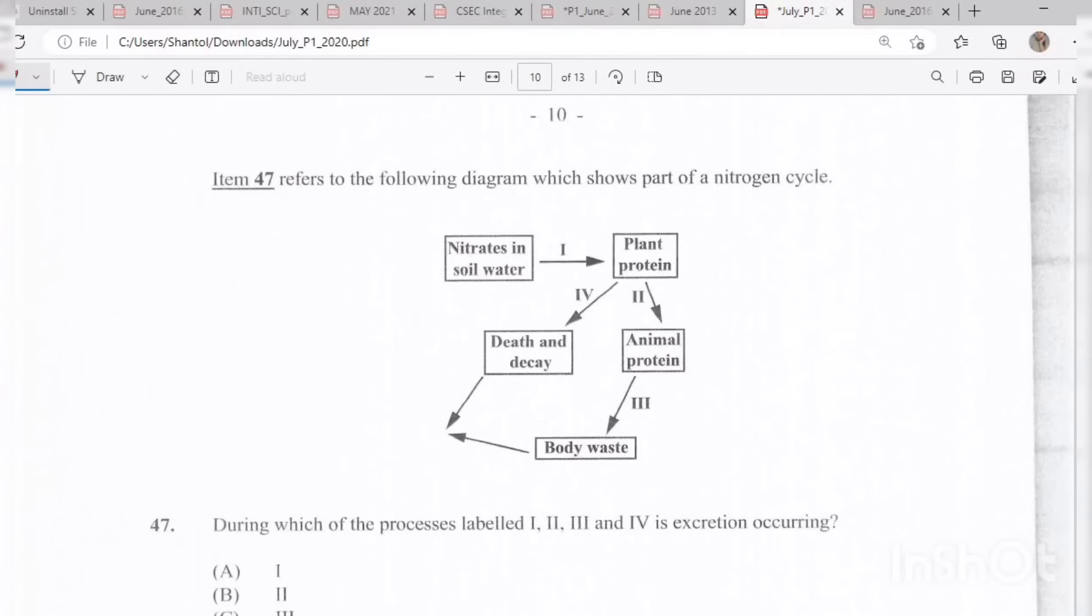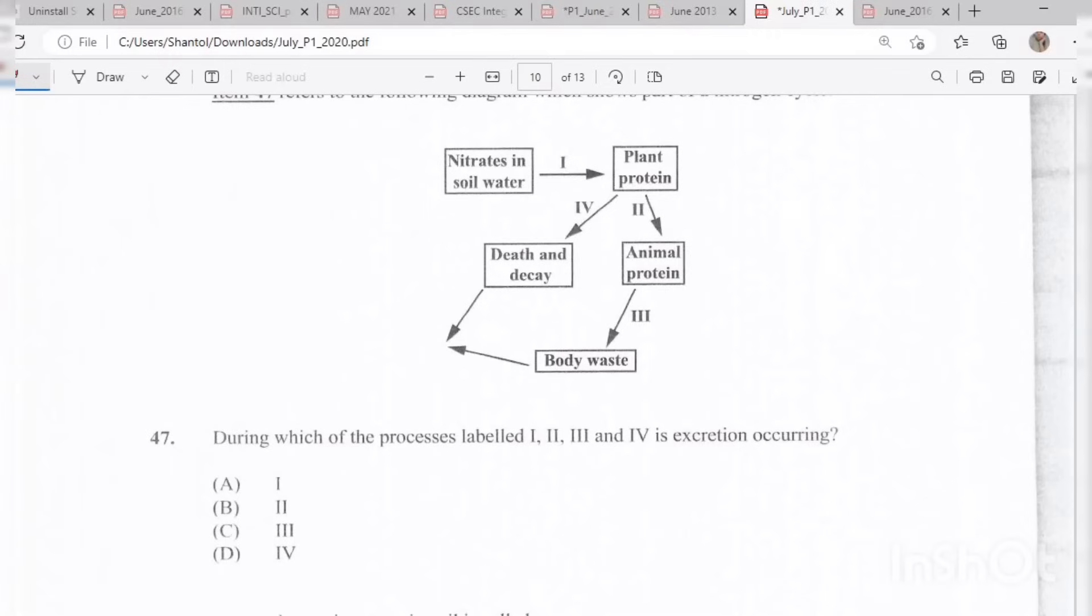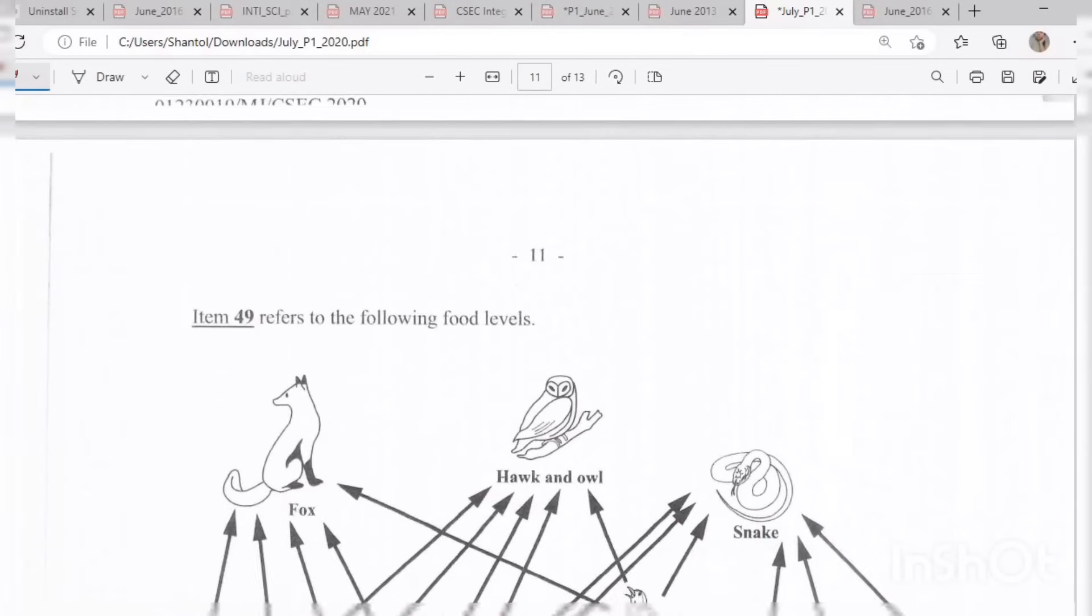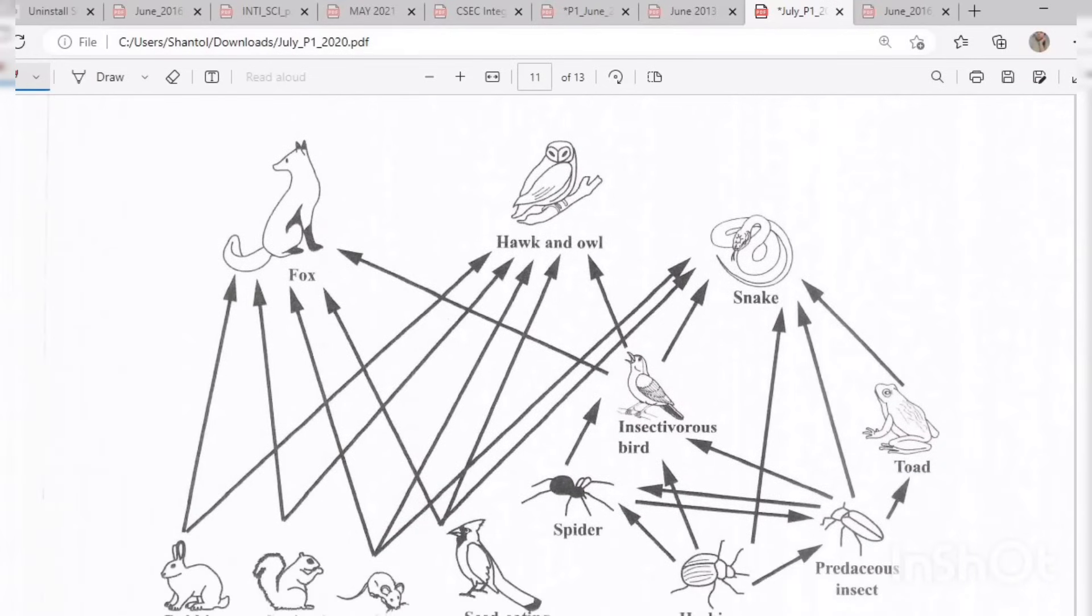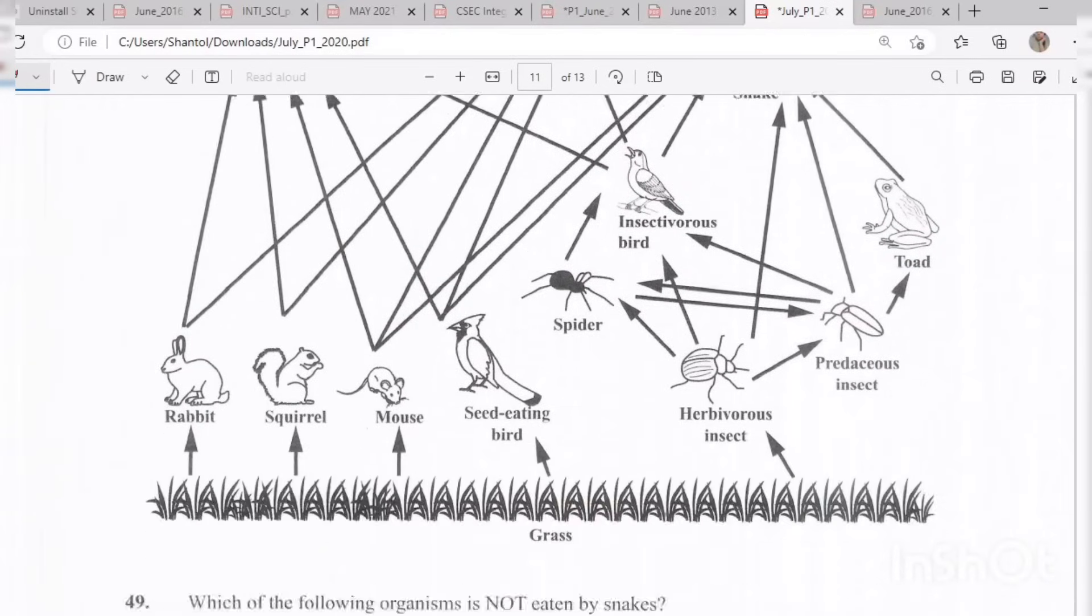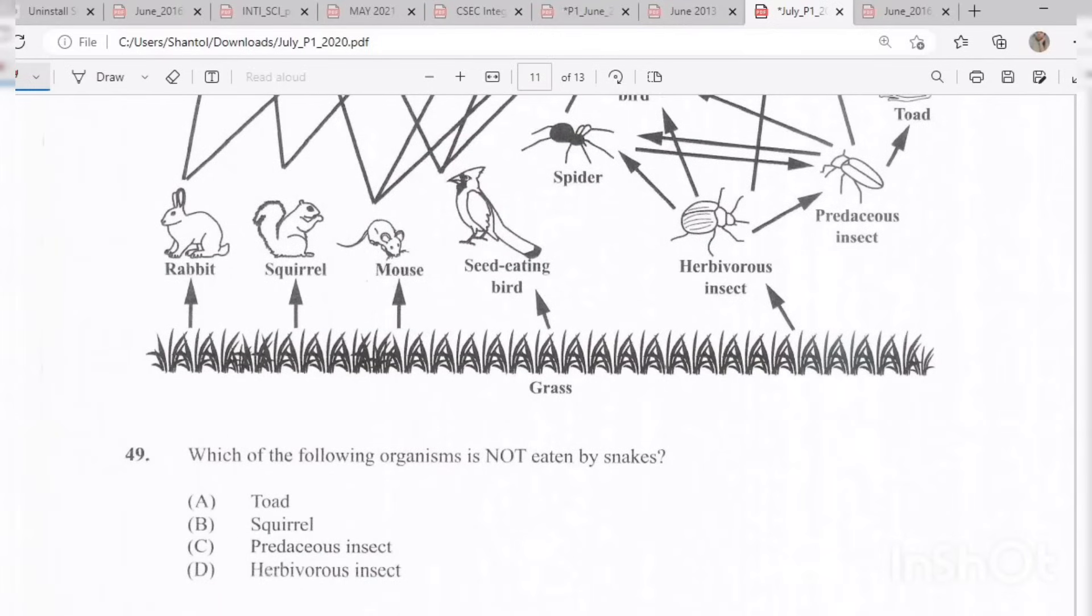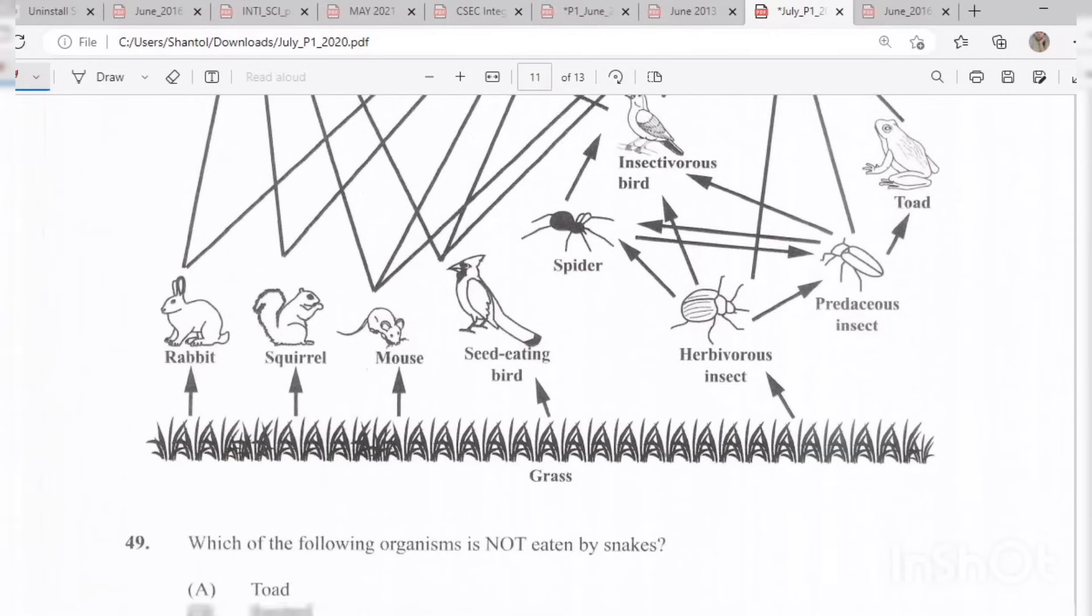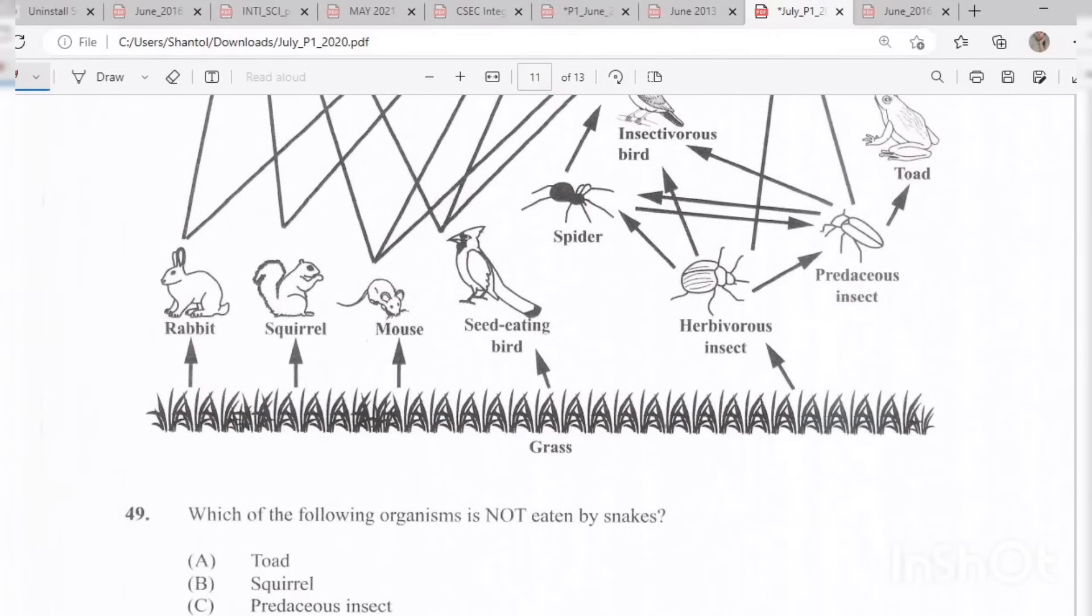Question 47 refers to the following diagram which shows part of a nitrogen cycle. During which of the processes labeled is excretion occurring? The answer is C, number 3, body waste. Question 48: Decayed organic matter in soil is called B, humus. Question 49 refers to the following food levels even though it looks complicated. I think you'll still be able to manage this question. Which of the following organisms is not eaten by snakes? The answer would be B, the squirrel.